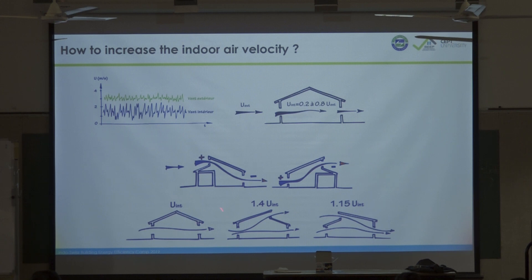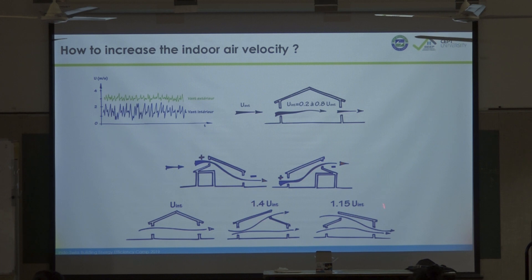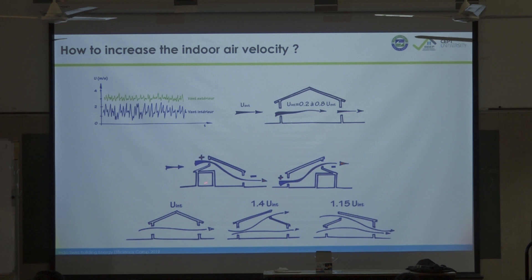When you do measurements on site — wind in green, indoor velocity in blue — there is always a difference, and indoor air velocity is always below the outdoor wind. However, you can accelerate the indoor air velocity with certain solutions: instead of a simple design, you can raise the opening area by creating a new opening and add 40 percent extra indoor velocity, compared to only 15 percent with another configuration.